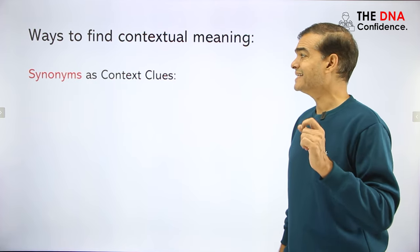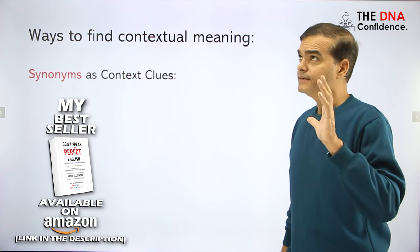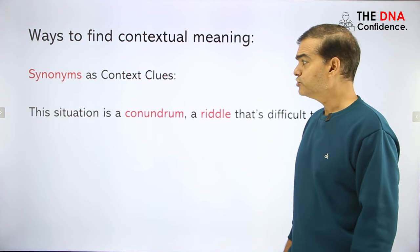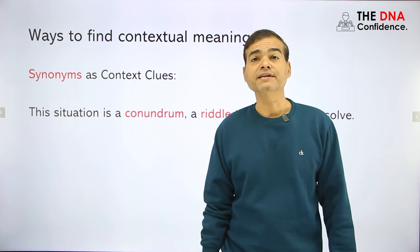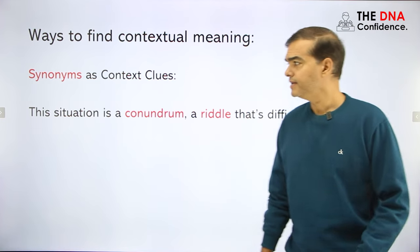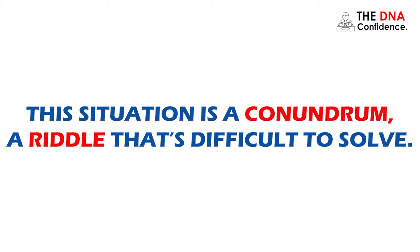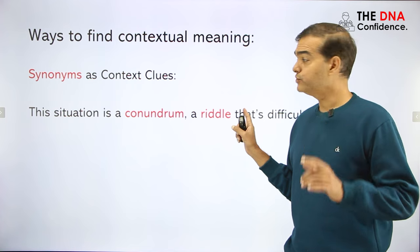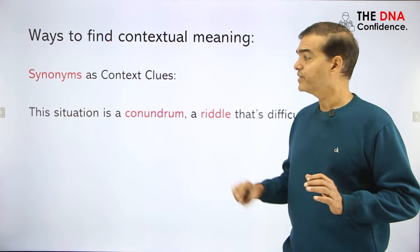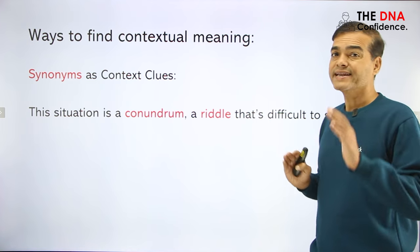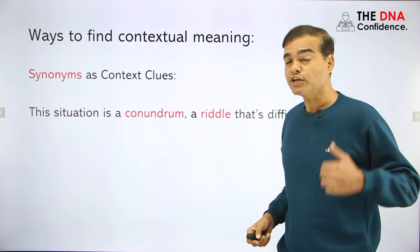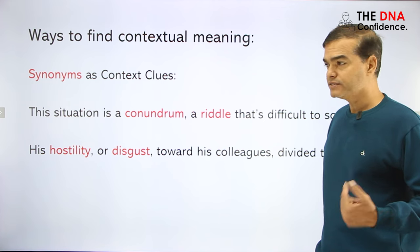One way to find contextual meaning is through synonyms as contextual clues. A clue is the information or idea you get. For example: 'This situation is a conundrum, a riddle that's difficult to solve.' Here, a synonym is given — 'riddle.' You know the meaning of riddle, so you can figure out the meaning of conundrum. This is called the contextual meaning of the word.